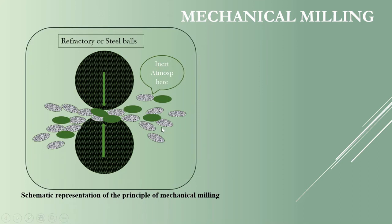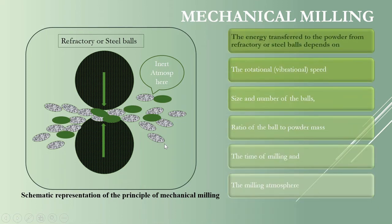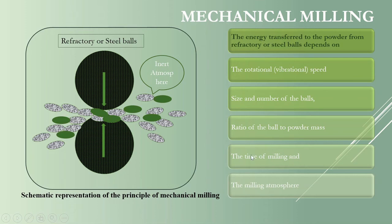Here we can see a simple mechanical mill wherein the energy transferred to the powder from the refractory or steel balls depends on several factors: first, the rotational speed with which the balls are moving inside the mill; second, the size and number of the balls; third, the ratio of ball to powder mass; and also the time of milling and the milling atmosphere — that is, whether it is an inert atmosphere.